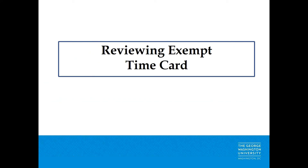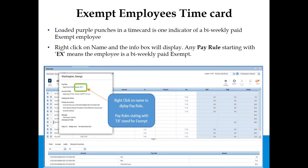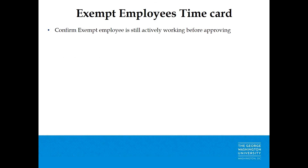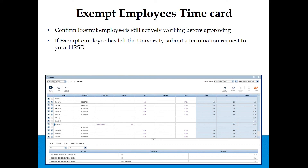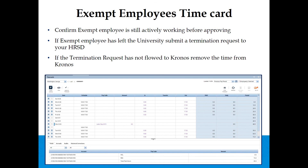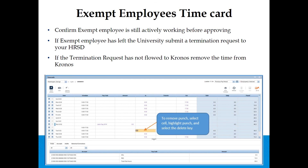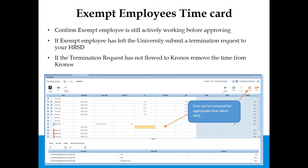Reviewing Exempt Time Cards: Purple punches loading in a time card indicate a bi-weekly paid exempt employee. Right-click on the name and the info box will display — any pay rule starting with EX means the employee is bi-weekly paid exempt. Confirm an exempt employee is still actively working before approving. If an exempt employee has left the university, submit a termination request to your HRSD. If the termination does not flow to Kronos, remove time from Kronos. To remove a punch, select the cell, highlight the punch, and press the Delete key. Once you have removed the appropriate time, select Save. The Save button will appear orange when there are changes; once saved, it turns gray.